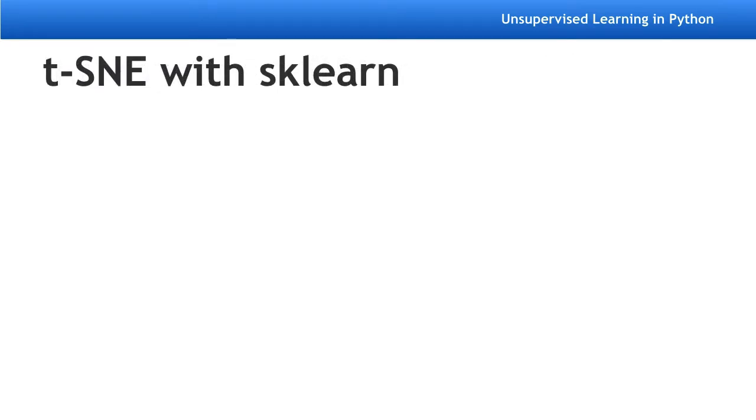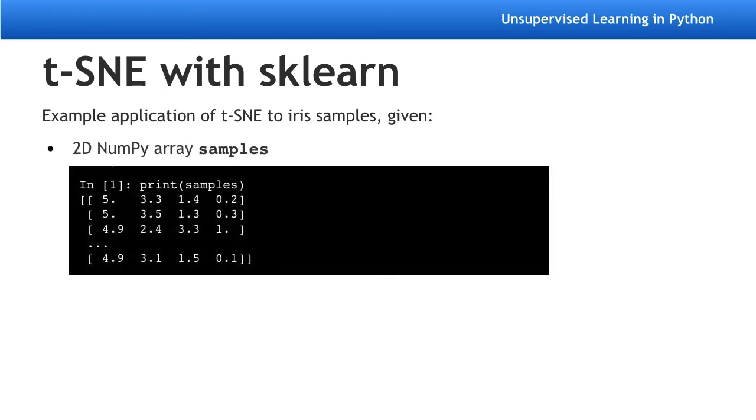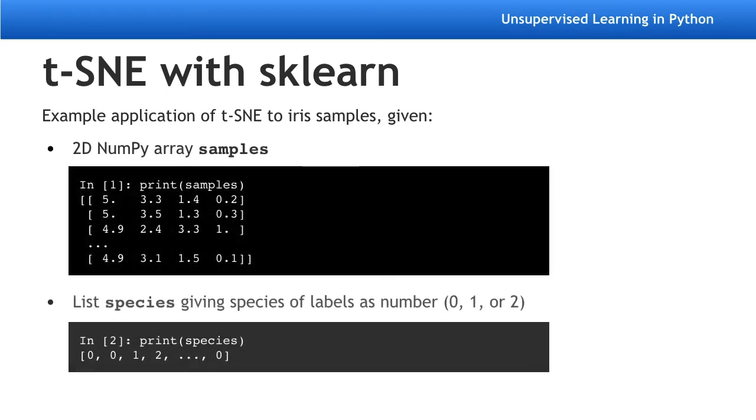t-SNE is available in scikit-learn, but it works a little differently to the fit transform components you've already met. Let's see it in action on the iris dataset. The samples are in a two-dimensional NumPy array, and there is a list giving the species of each sample.